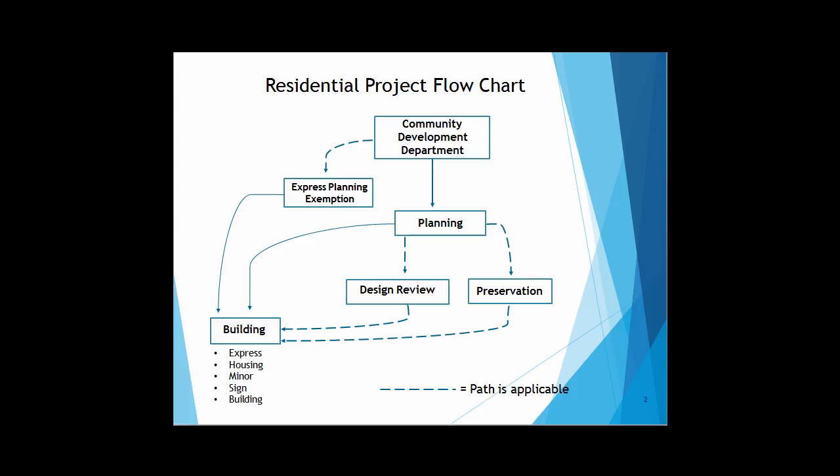Jumping right in, this is a flow chart illustrating the process one would go through when submitting for a residential project. If it was determined that your project was minor in nature and did not fall within a design review or preservation district, and you could comply with the exemptions provided on the form, you would be routed directly to the building queue without having to go through the planning counter staff.